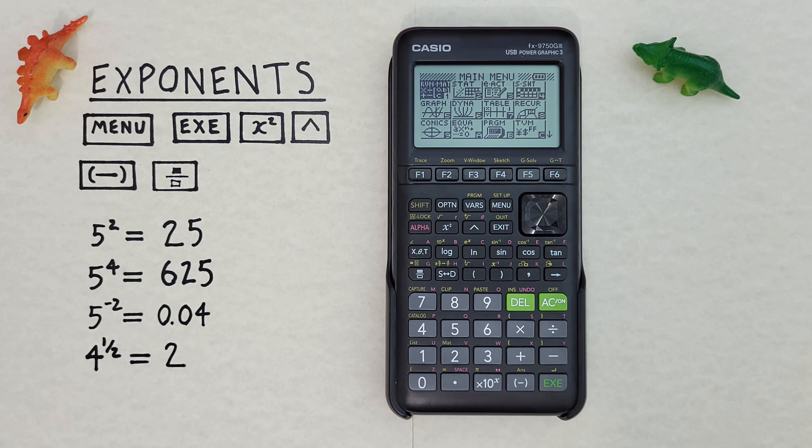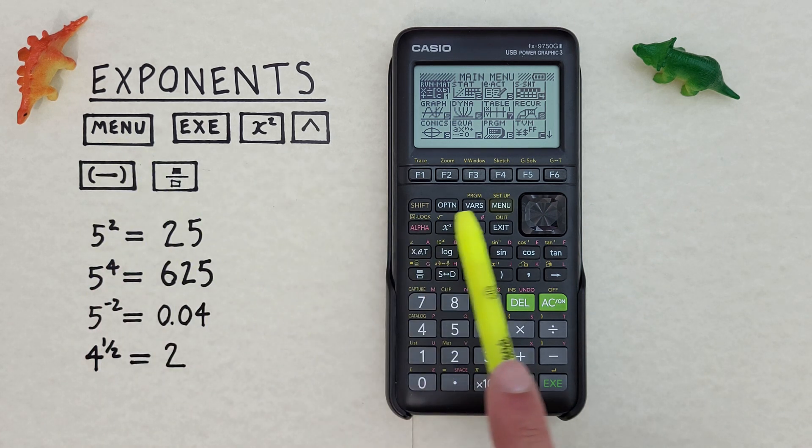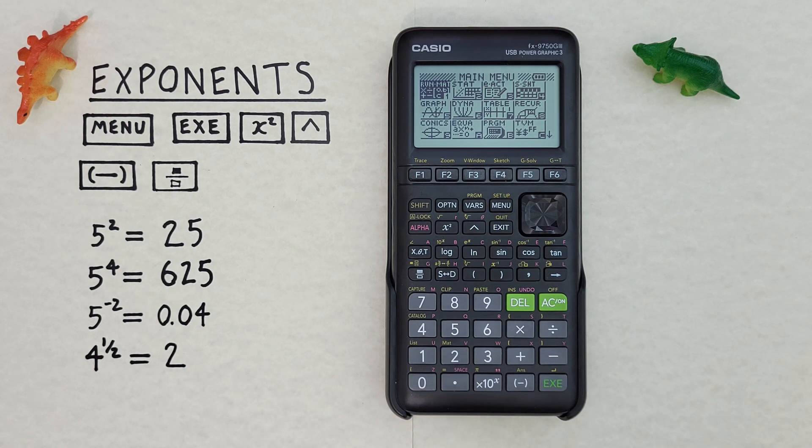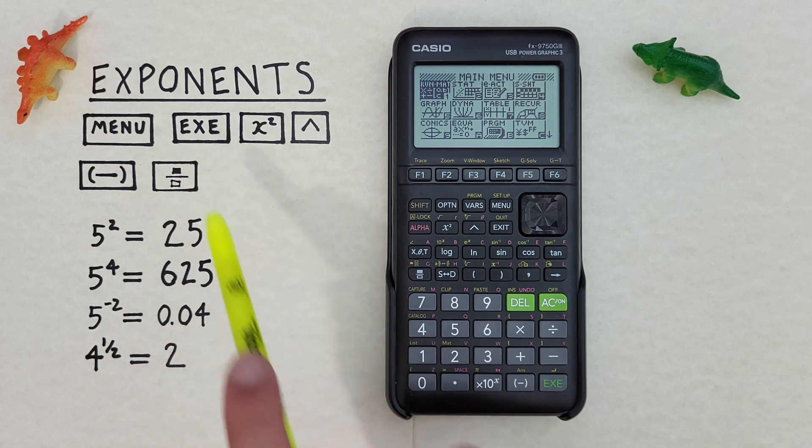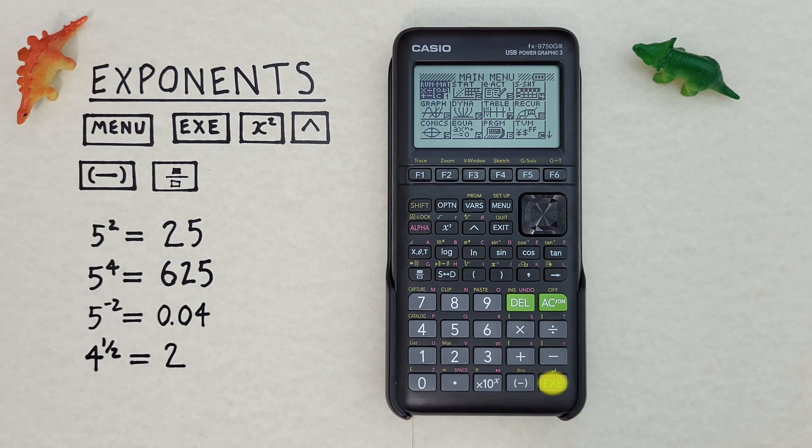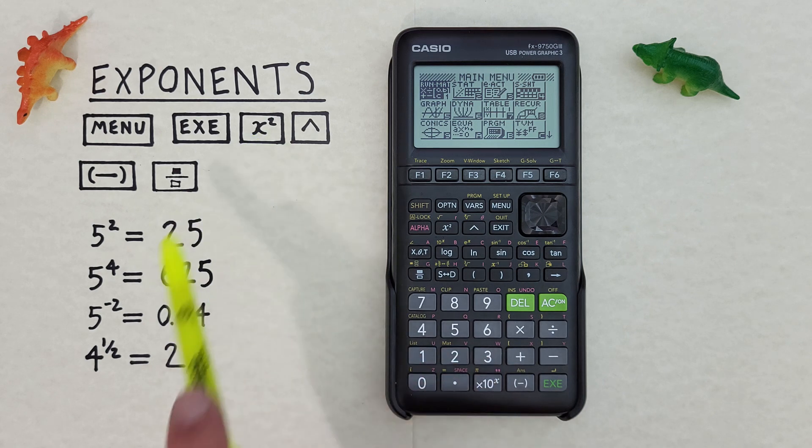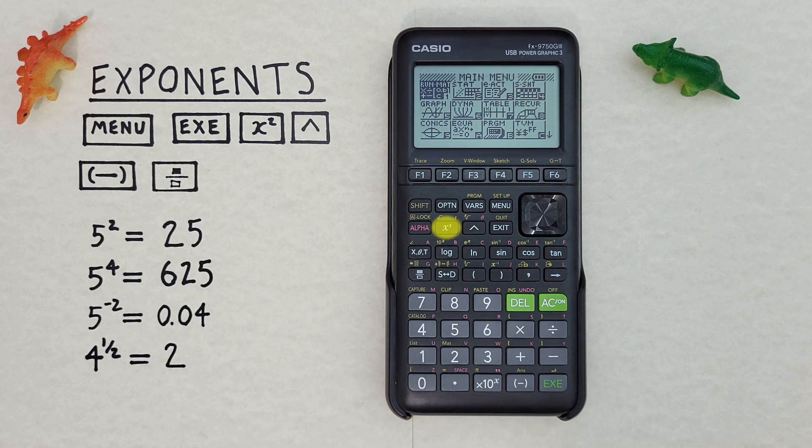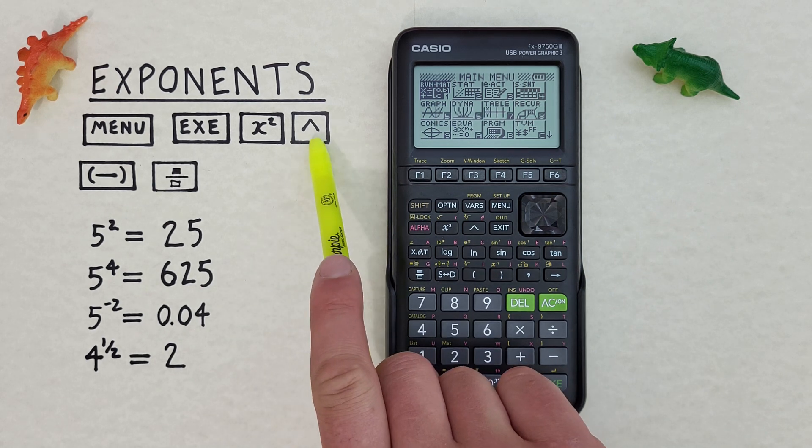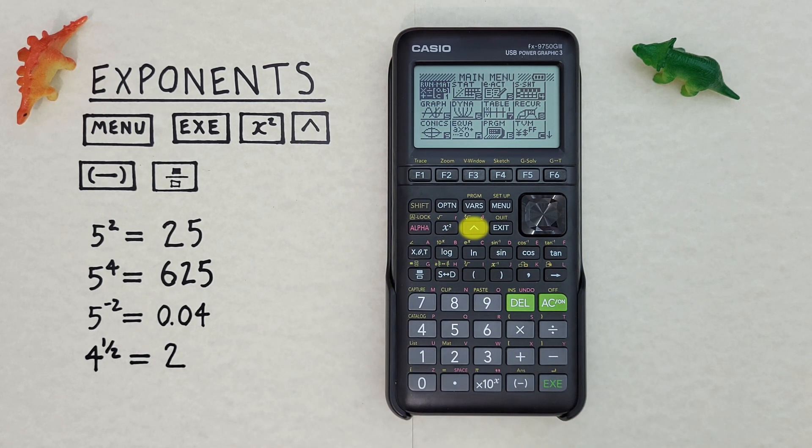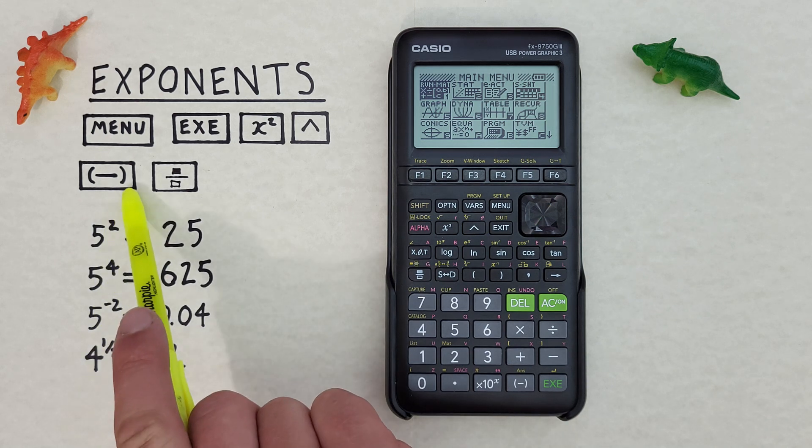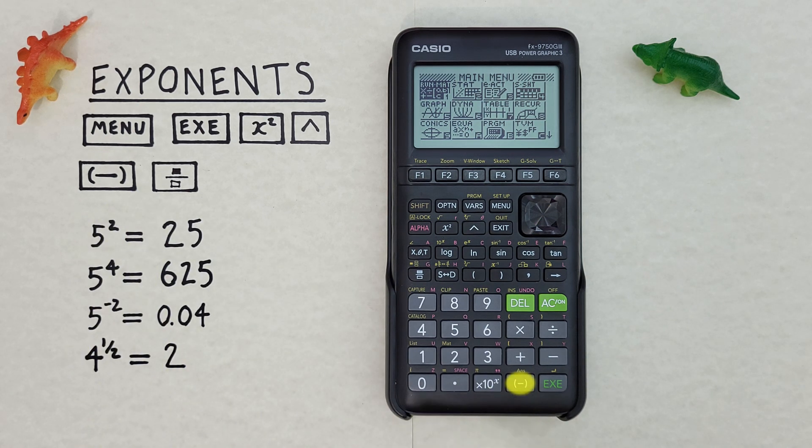To do that we use the menu key that looks like this, located here. The exe or execute key that looks like this, located down here. The x squared key that looks like this, located here. The up arrow or caret key that looks like this, located here. The negative key that looks like this, located down here. And the fraction key that looks like this, located here.